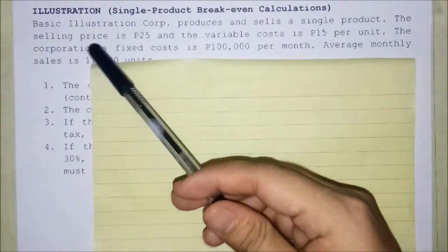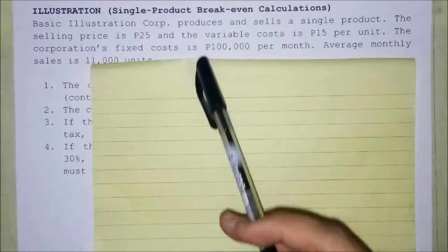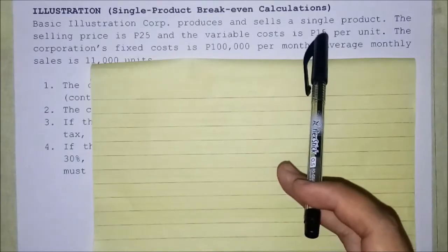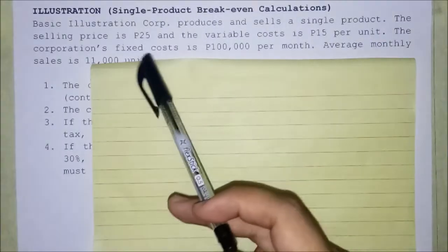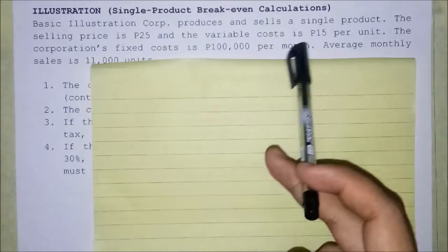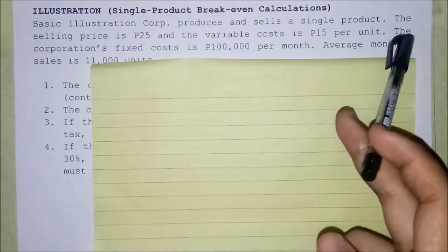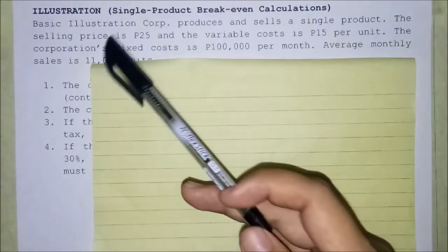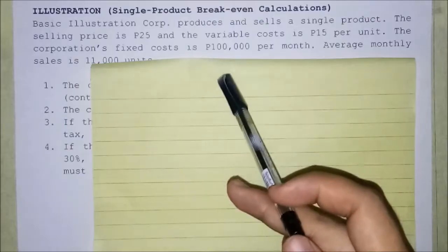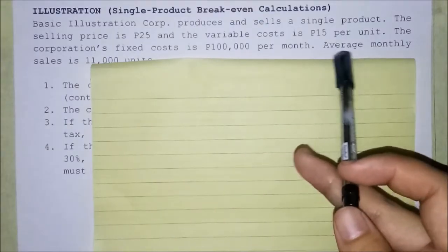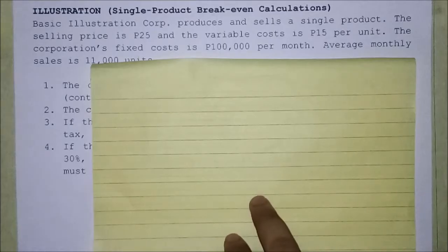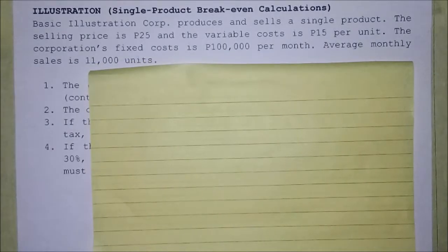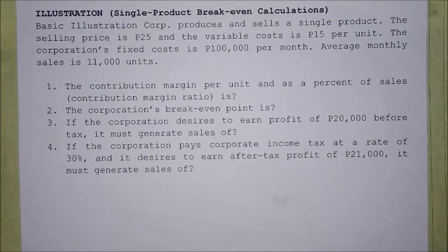Illustration — single product break-even calculations. Basic Corporation produces and sells a single product. The selling price is 25 pesos and the variable cost is 15 pesos per unit. The corporation's fixed cost is 100,000 per month. Average monthly sales is 11,000 units.